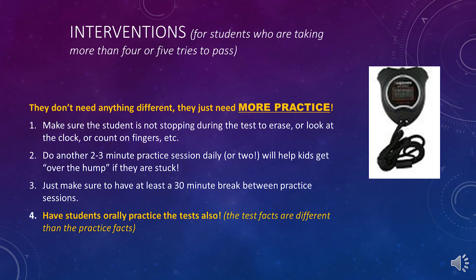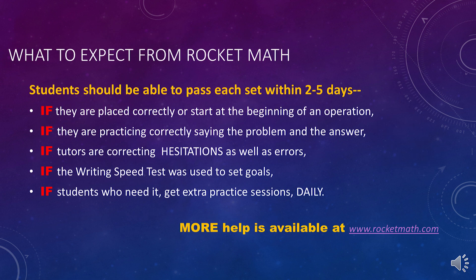Here are some interventions for students who are stuck. Remember, these students don't need anything different—they just need more practice. One, make sure the student is not stopping during the test to erase, look at the clock, or count on their fingers. Two, do another two- to three-minute practice session daily, or two sessions—that will help kids get over the hump if they are stuck. Three, make sure to have at least a 30-minute break between practice sessions. Four, have students orally practice the test facts also, as the test facts are somewhat different than the practice facts. Students should be able to pass each set within two to five days if they are placed correctly, practicing correctly by saying the problem and the answer, if tutors are correcting hesitations as well as errors, if the writing speed test was used to set goals, and if students who need it get extra practice sessions daily.